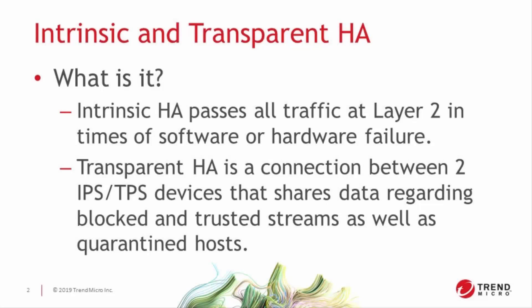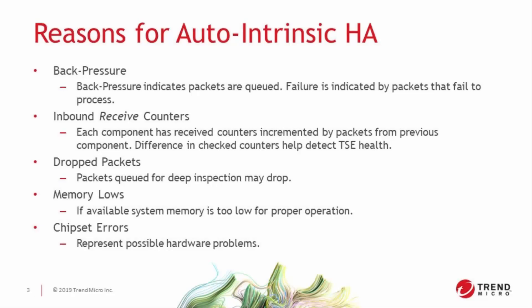So what is intrinsic HA exactly? By definition it means having the capability of bypassing all traffic automatically in case of hardware or software failure, which preserves the availability of the data you need to run your business, application, or life. Here are some of the reasons an IPS TPS device might go into that state on its own. This feature is also called layer two fallback because when engaged, the IPS TPS passes all traffic without inspection at layer two in the OSI model.